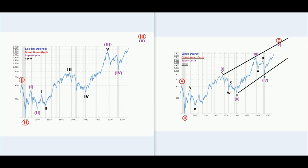The dot-com bubble contraction, retracement wave B, and then wave C in the 2008 recession — same count as Dow Jones. However, when looking at the alternate count, the one with an ending diagonal scenario, there's much more room on the upside. That's why I'm saying a contraction would be needed before another bull run to have the overthrow.